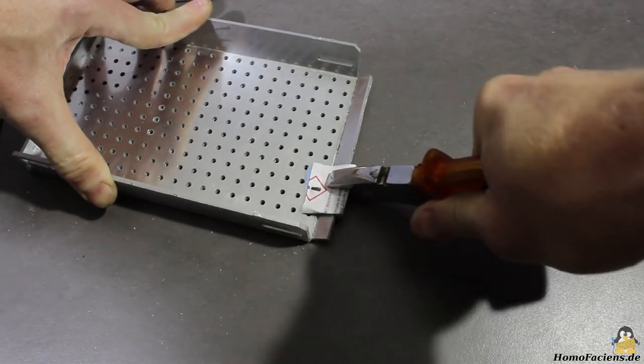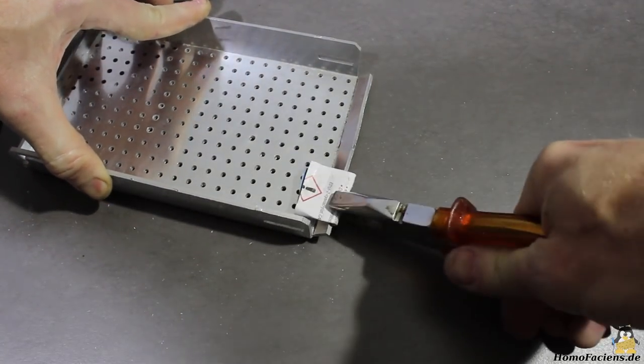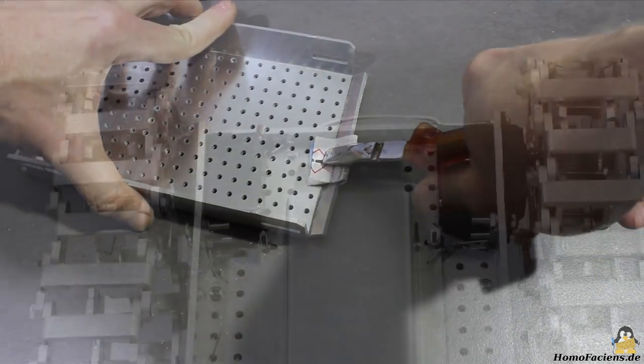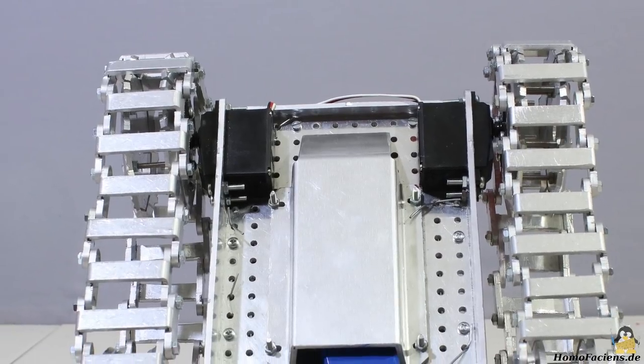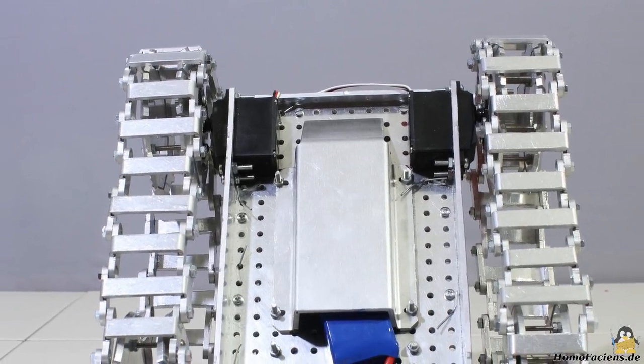Bending the parts results in three dimensional structures. After assembling all parts, I got a very sturdy tracked rover.